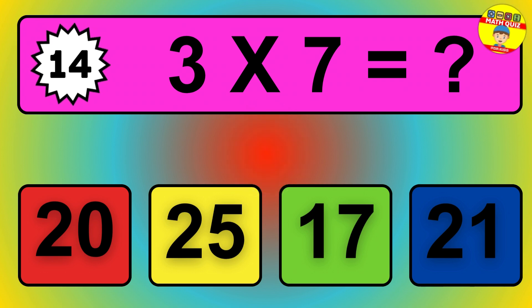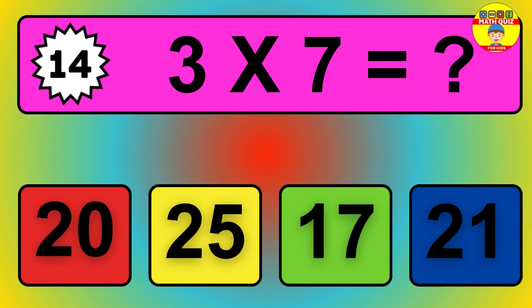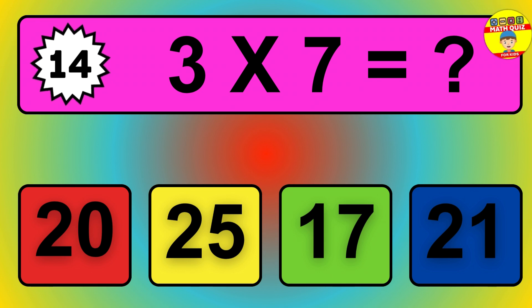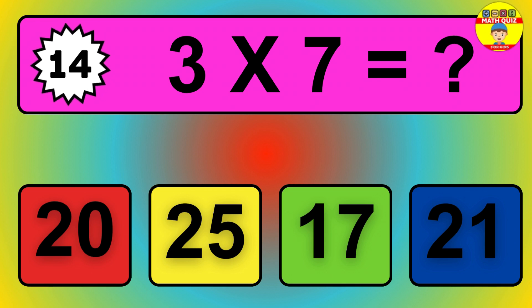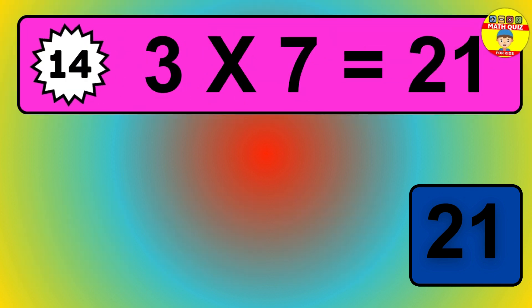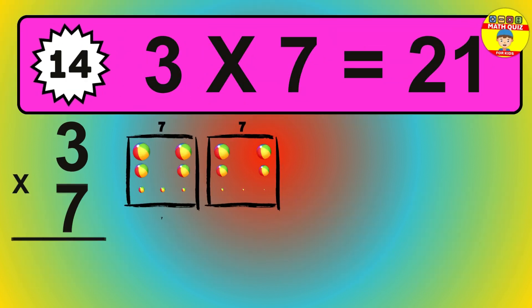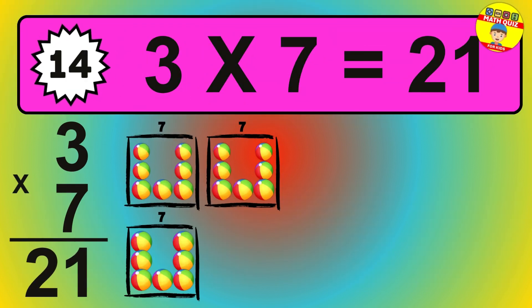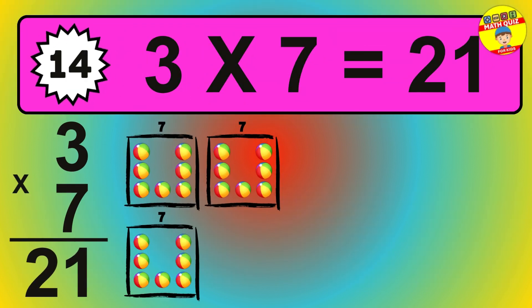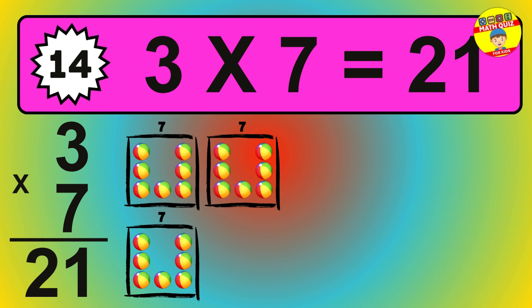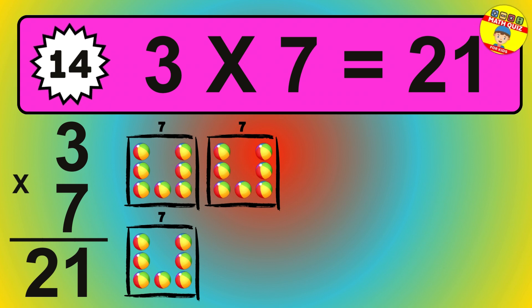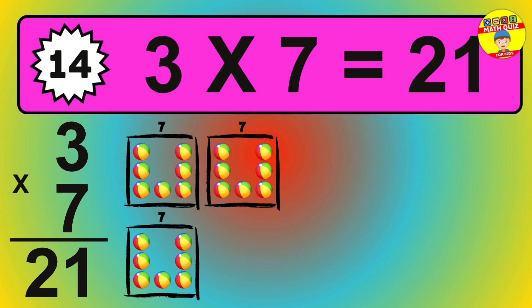Question 16. 7 times 5 equals what? To calculate, we have 7 groups with 5 balls each one. So, how many balls do we have? 35 balls.